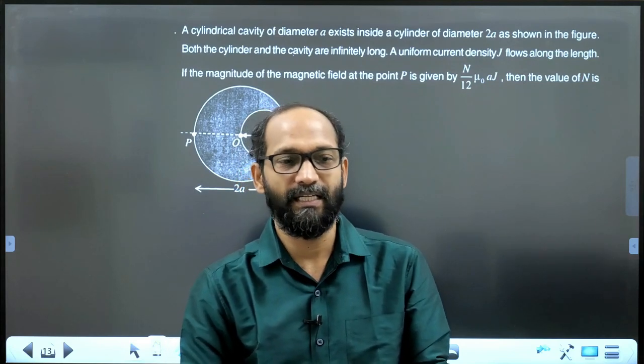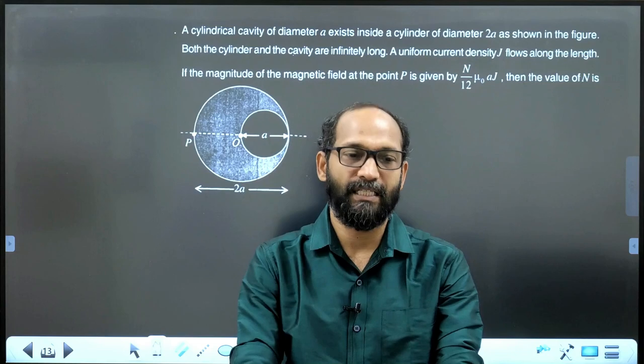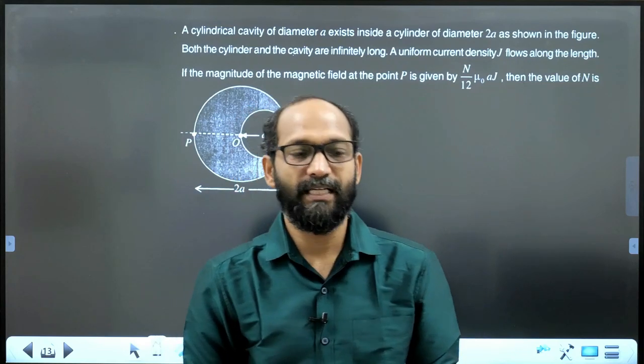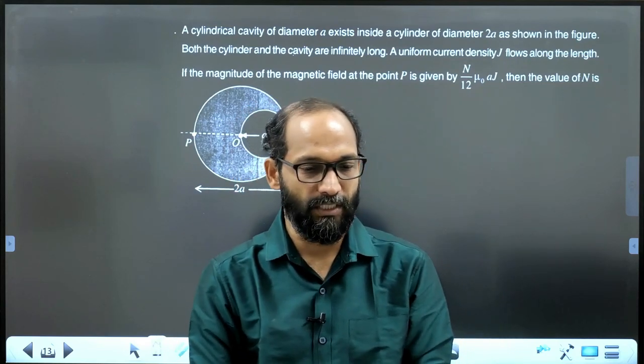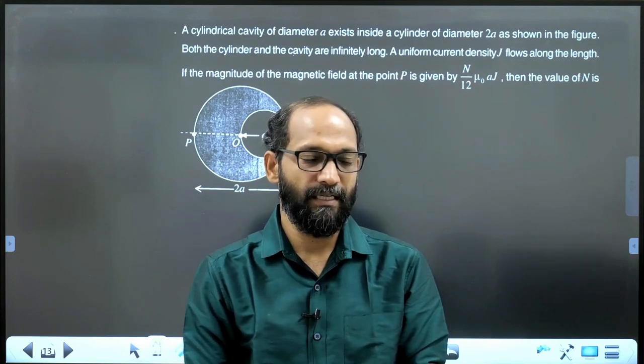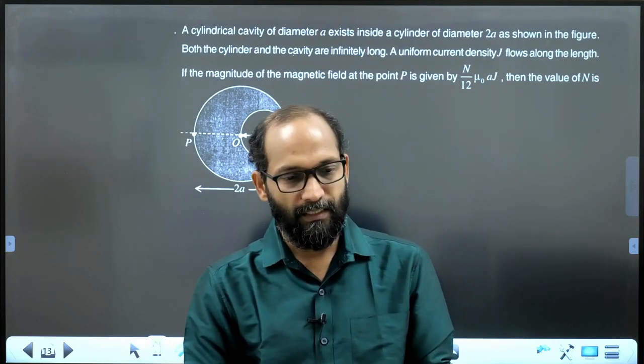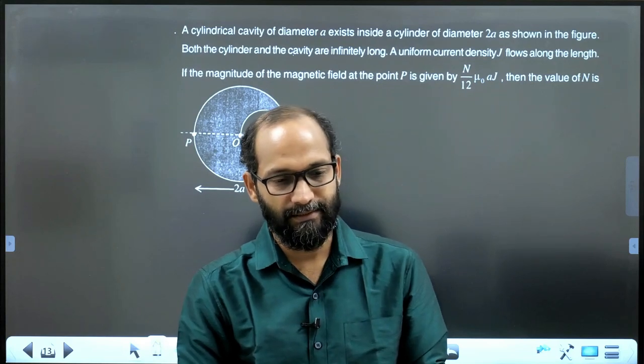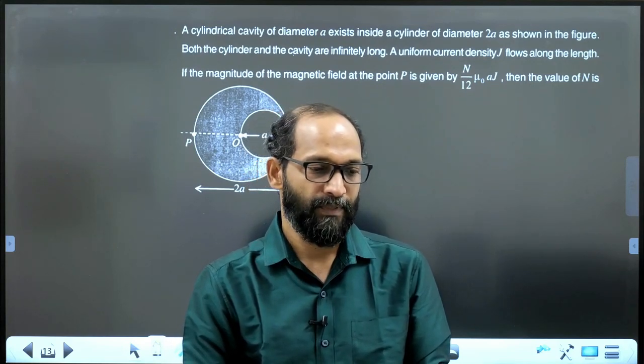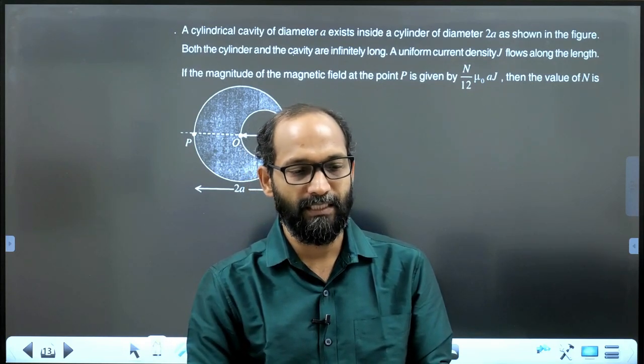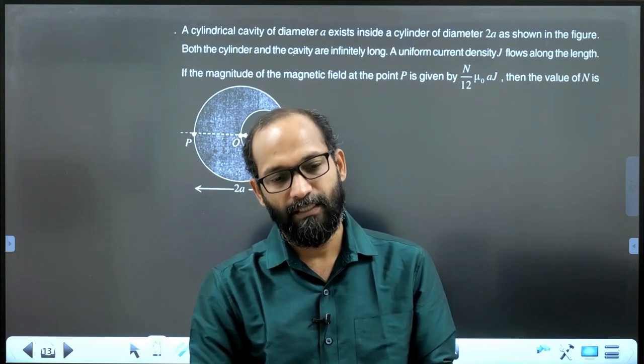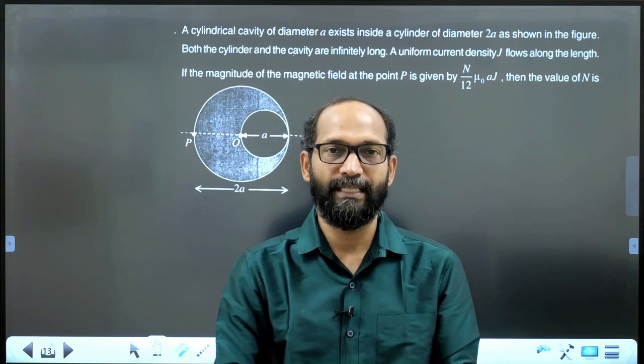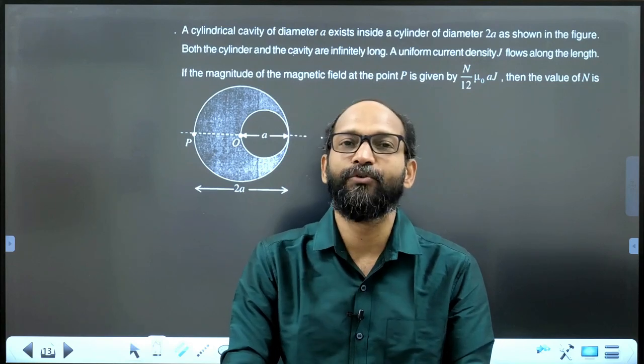A cylindrical cavity of diameter A exists inside a cylinder of diameter 2A as shown in figure. Both the cylinder and the cavity are infinitely long. Now, a uniform current density J flows along the path. If the magnitude of magnetic field at P is given by n by 12 mu0AJ, then value of n is.